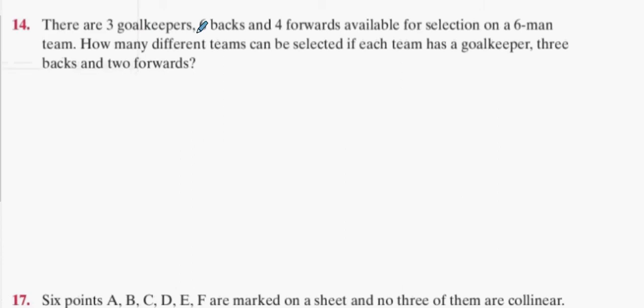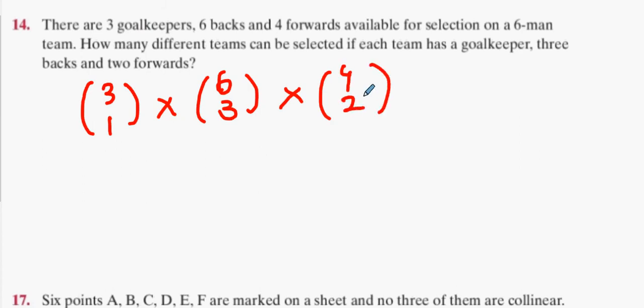Okay, there are three goalkeepers, six backs, four forwards available for selection on a six-man team. How many different teams can be selected if each team has a goalkeeper, three backs and two forwards? Three choose one for the goalkeepers, multiply by six backs choose three, multiply by four forwards choose two. And you should get 360 when you put all that into the calculator.